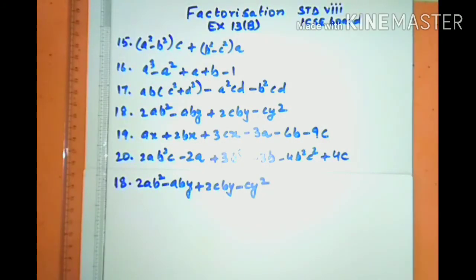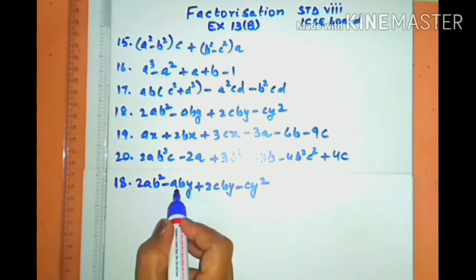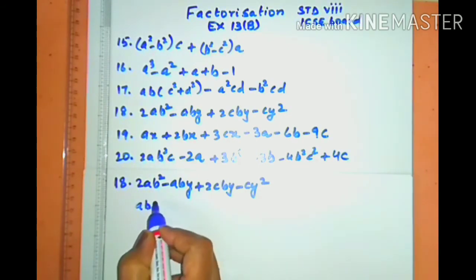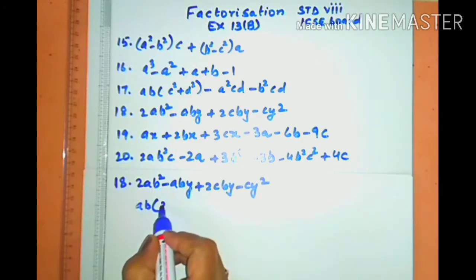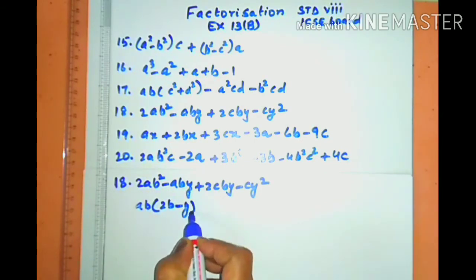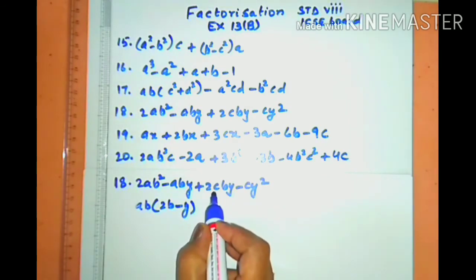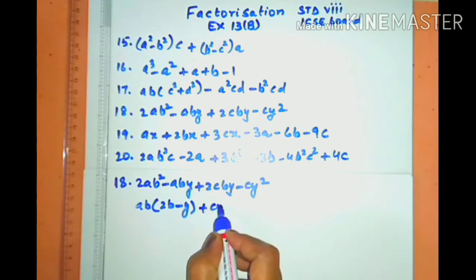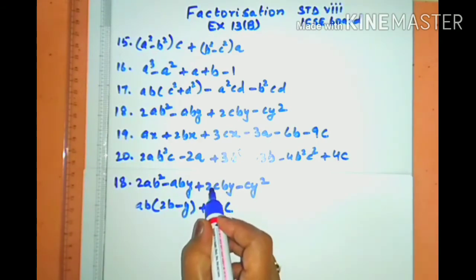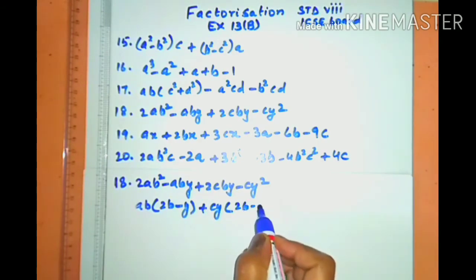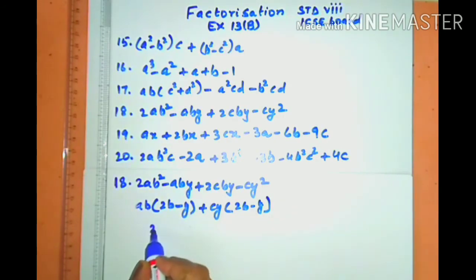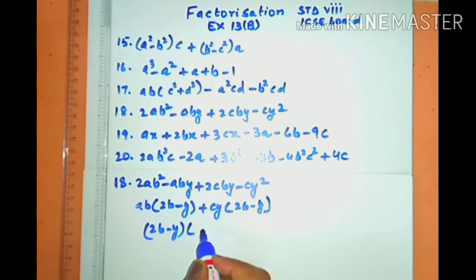Sum number eighteen is simpler. From the first pair, ab is common, giving (2b − y) in the bracket. From the second pair, cy is common, giving (2b − y) in the bracket. So (2b − y) is the common factor, and the remaining bracket is (ab + cy).